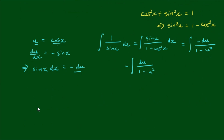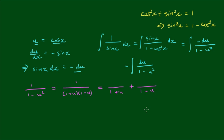The fraction we now have to deal with is 1 divided by 1 minus u squared. The denominator is a difference of two squares — that being 1 squared minus u squared — so we can rewrite it as (1 + u)(1 − u). Writing the integrand like this, we can separate it into two partial fractions: something over 1 plus u, plus something over 1 minus u. Using the cover-up rule, you'll find that both numerators equal one half.